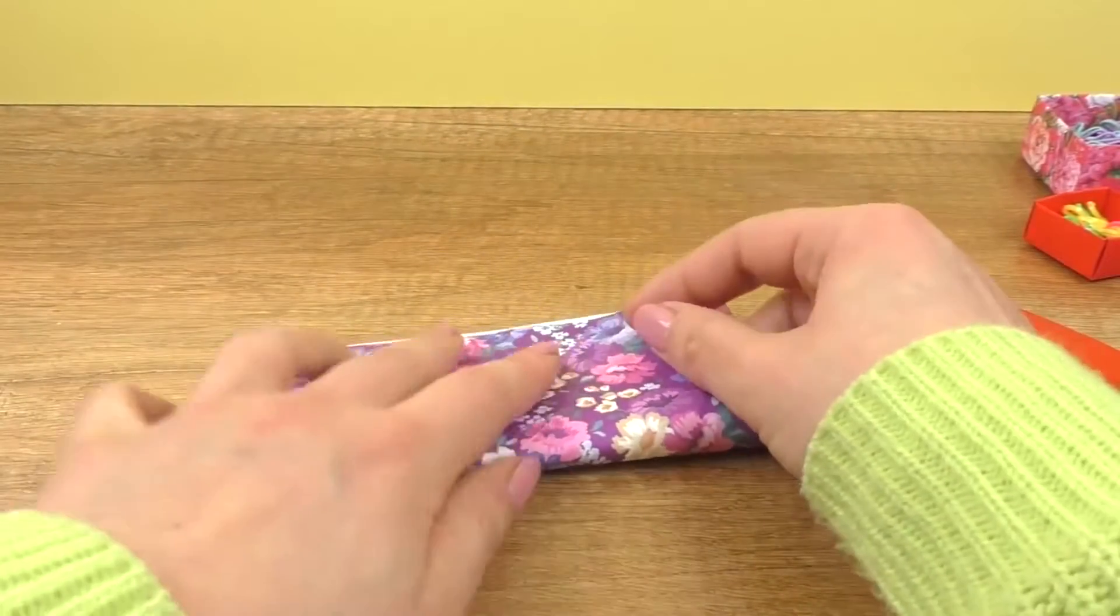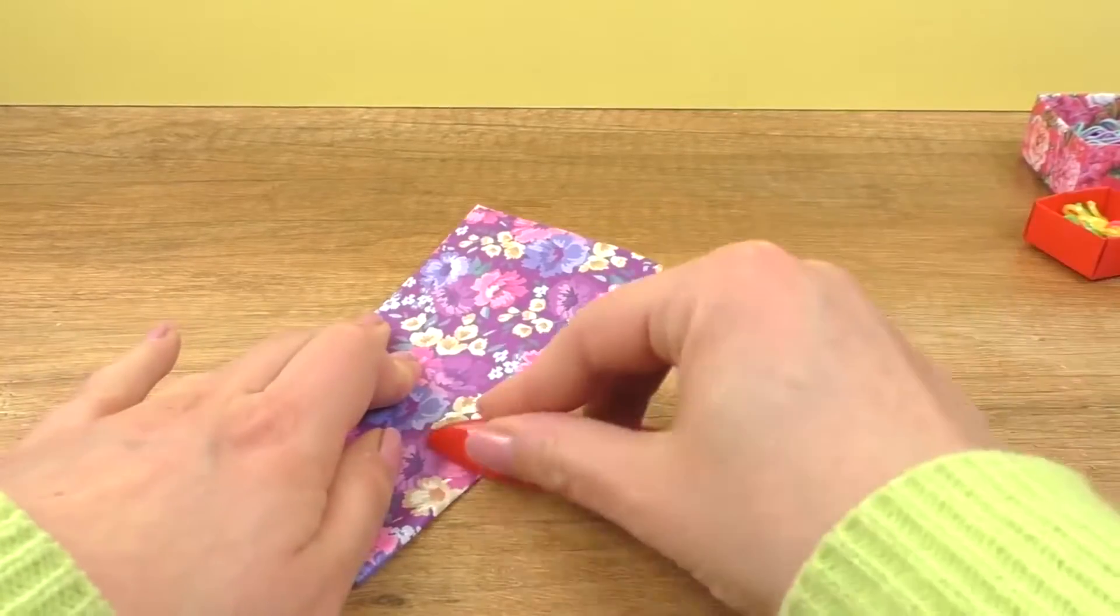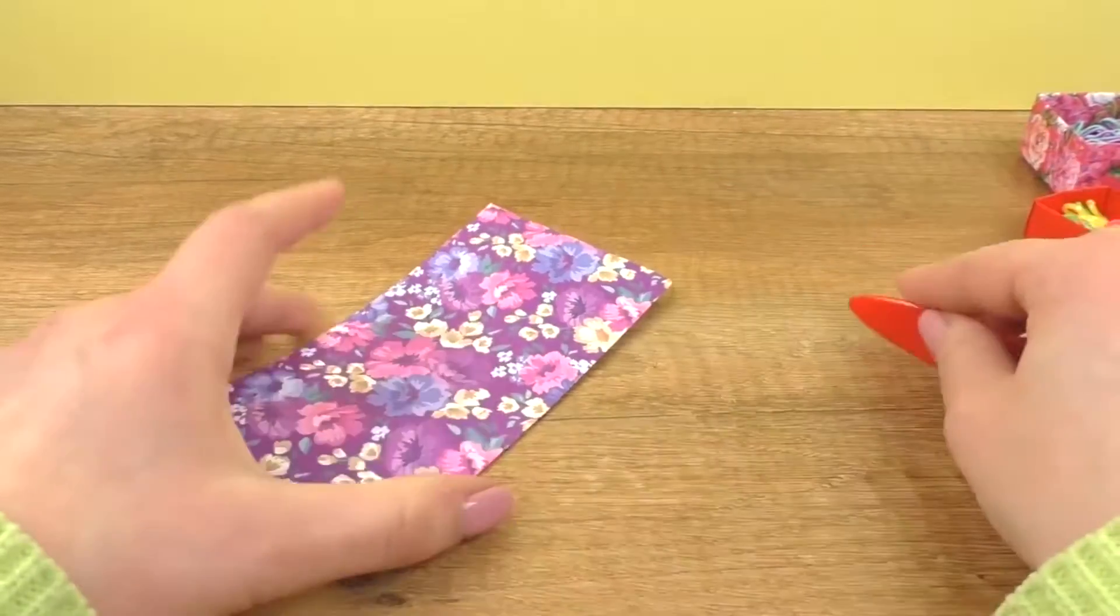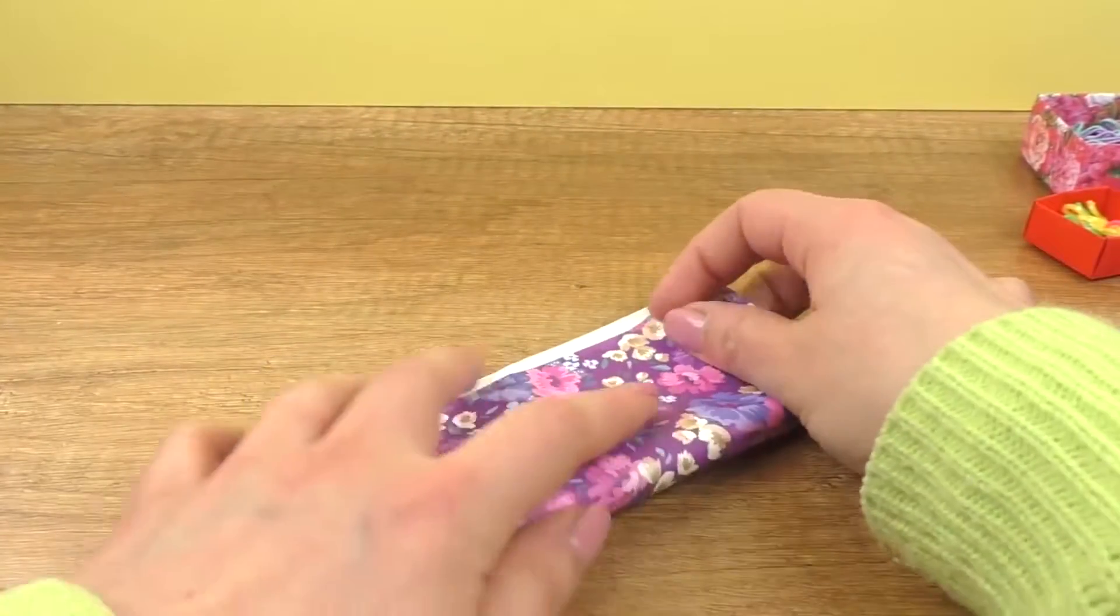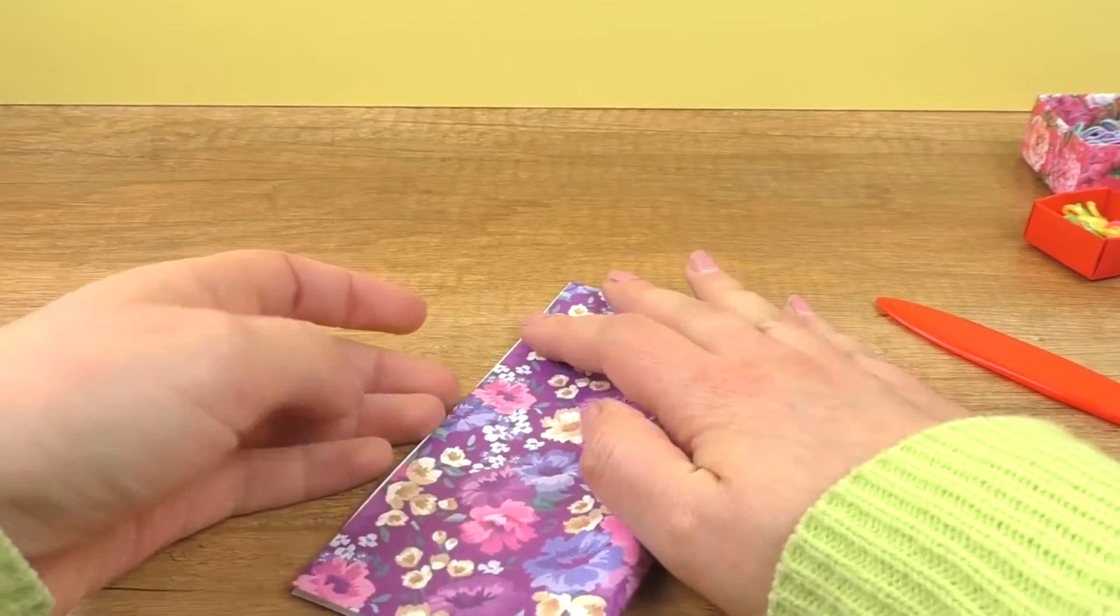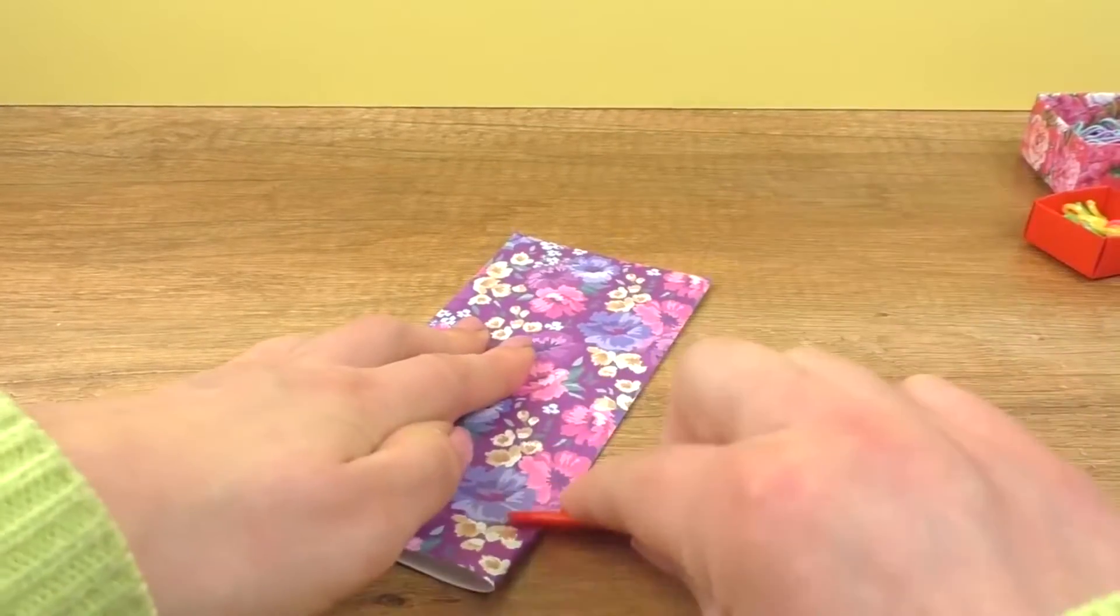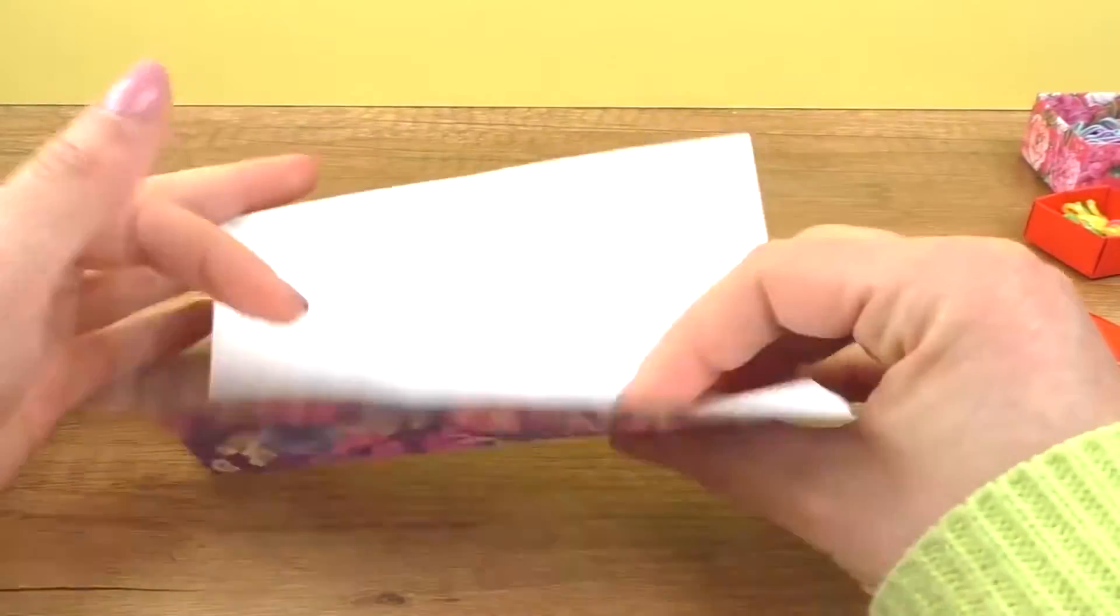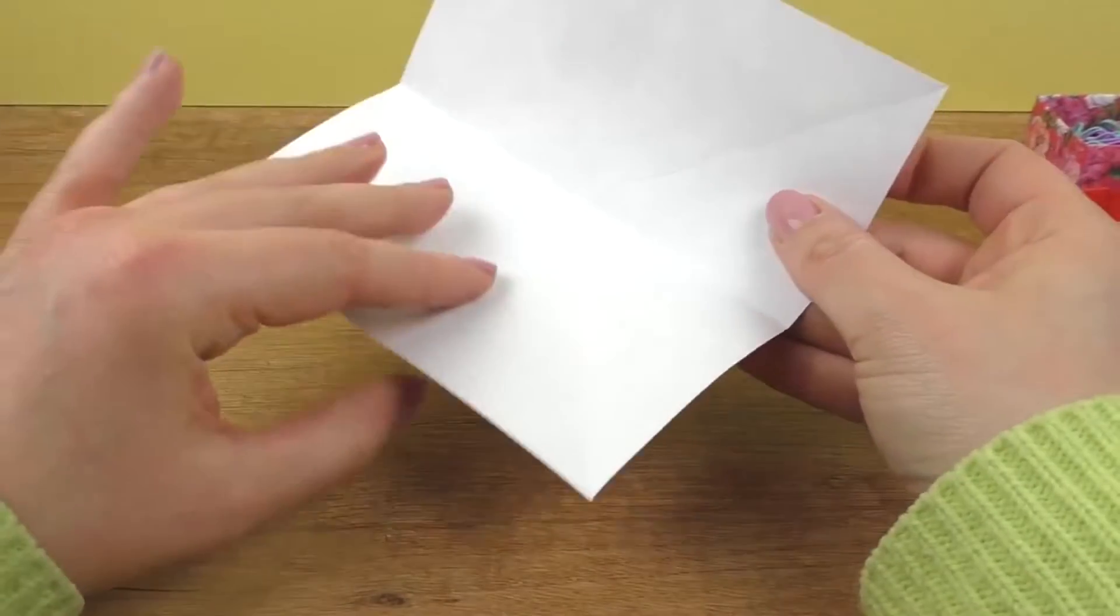Then I'm going to fold it again side to side. And then the other way. So now in the middle, I have four lines going across.